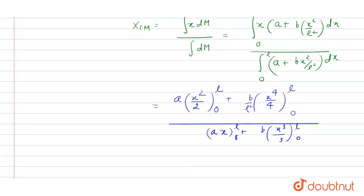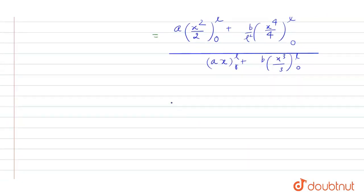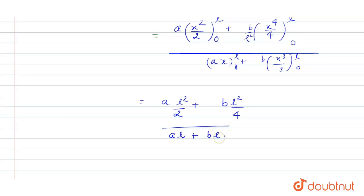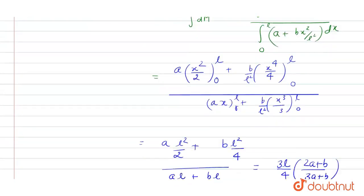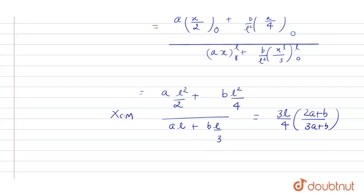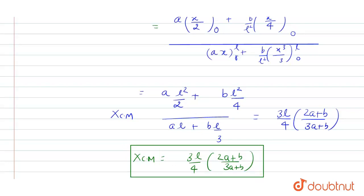Substituting the limits — putting x equals l (the term at x equals 0 vanishes) — the numerator becomes al²/2 plus bl⁴/(4l²), which simplifies to al²/2 plus bl²/4. The denominator becomes al plus bl³/(3l²), which simplifies to al plus bl/3. Solving, the center of mass equals 3l(2a + b) divided by 4(3a + b). This is our final answer. I hope you understood this explanation, thank you.